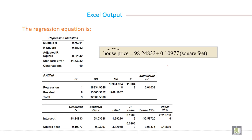Here multiple R is 0.76211, R square and adjusted R square are shown. The final model is 98.24833 plus 0.10977 times square feet. This is the model, Y equals this. And this is the ANOVA table, and this is the coefficient intercept.